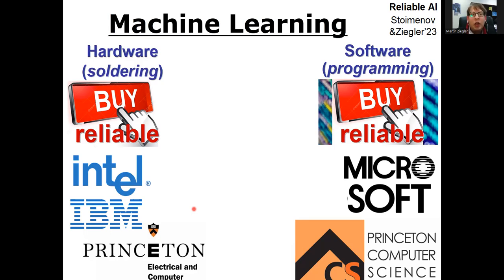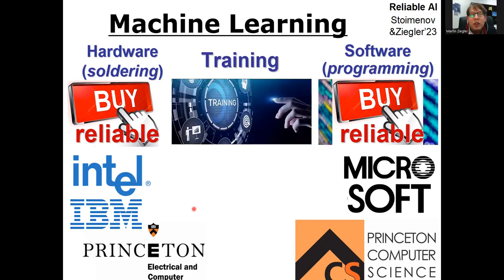So that's where reliability comes in, and it's important in classical computing. But in machine learning, between these antipodes, a new third aspect comes in: training. So classically, we buy hardware, we buy or program software, and then we're done. But in machine learning, we additionally have the training phase — training a model.